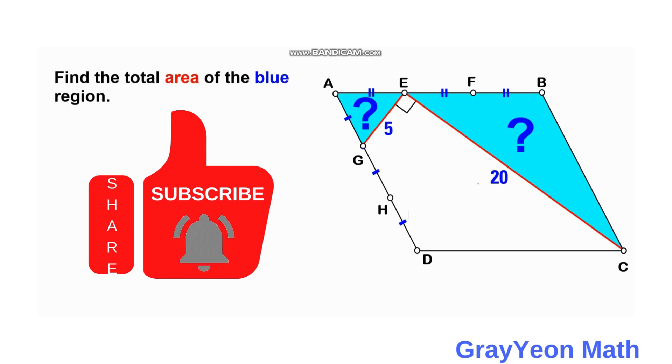We have a parallelogram A, B, C, D, and the sides of the parallelogram are divided into three equal parts.